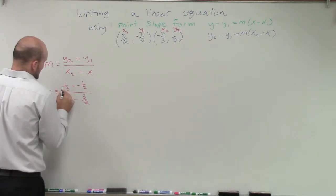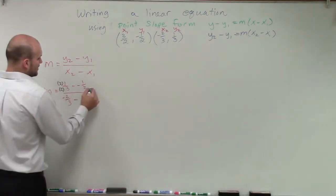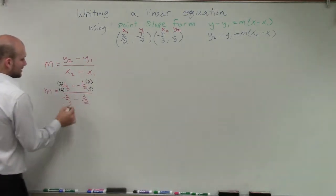But remember, when getting common denominators, whatever you do in your denominator, you have to do in your numerator. And then to get 2 to be 6, I need to multiply by 3/3. And we're going to do the same thing over here.